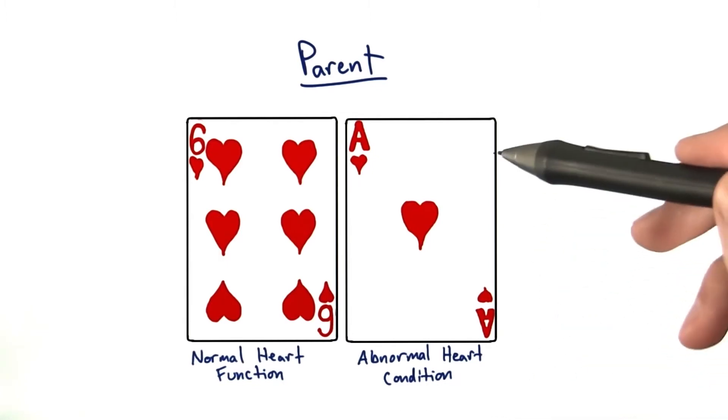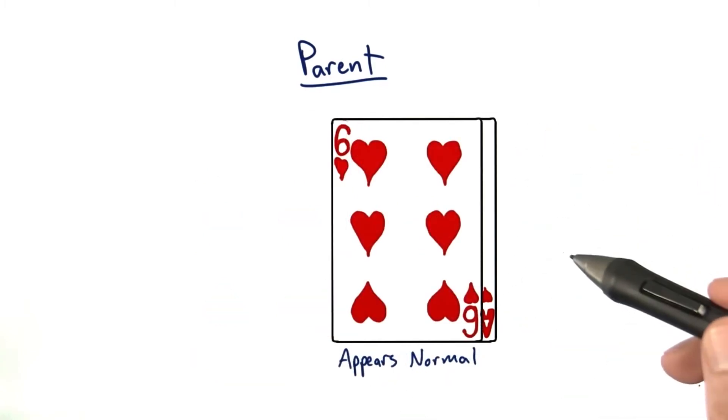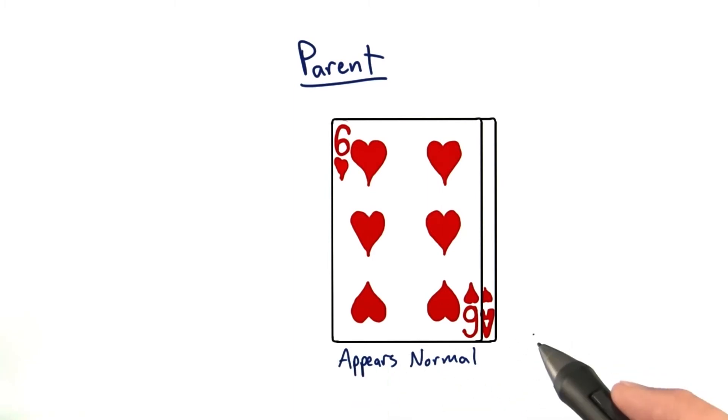Even though one of the copies in the pair causes the heart condition, it's hidden as long as the other copy has normal function. So the parent appears to have normal heart function even though they have one normal copy and one abnormal copy.